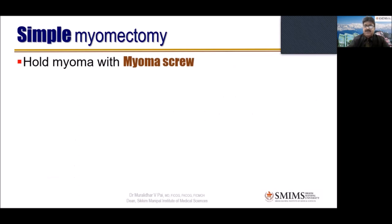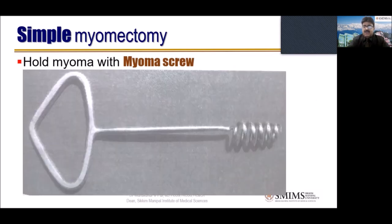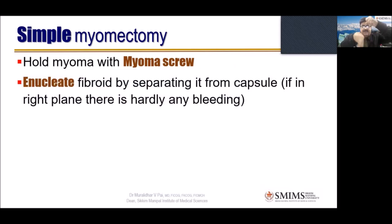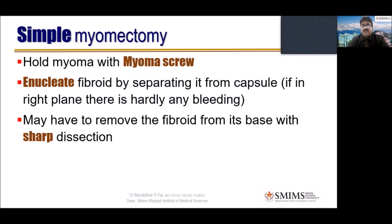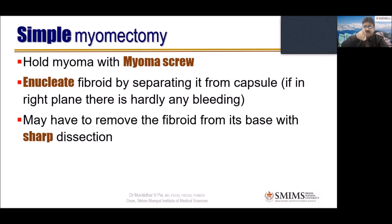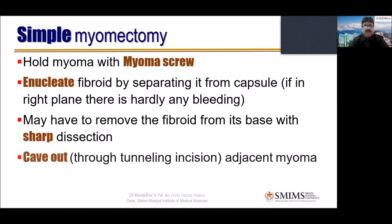Hold the myoma with the myoma screw — this is an important instrument — so you can hold it in one hand and start enucleating the fibroid by separating it from the capsule. If in the right plane, there is hardly any bleeding. Sometimes you may have to use scissors to nip adhesions in between. Towards the end, the last part is tightly stuck, so you may need sharp dissection to cut it from its base. Sometimes even finger dissection is good enough. Cave out adjacent myomas through the tunneling incision — two myomas can be removed through one incision. You don't have to put many incisions; PGs can practice enucleation on hysterectomy specimens.